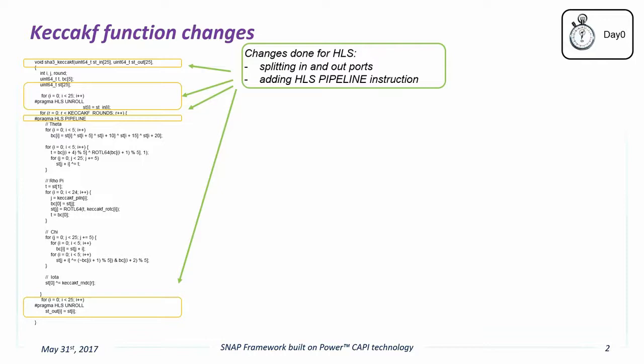As you can see, the code snippet remains very readable to a programmer. There were three yellow box changes we made. The first was to separate the input buffers from the output buffers, so the FPGA didn't have to write to the same location it was reading. The other two changes — for unroll and pipeline — allow the compiler to perform parallel operations on code segments.